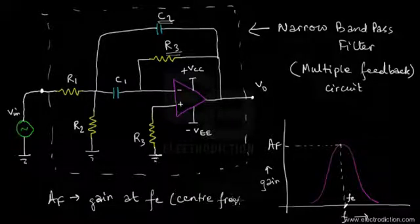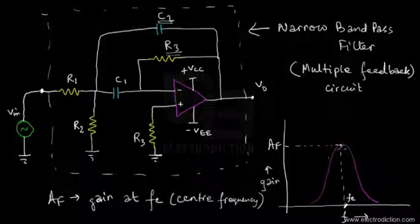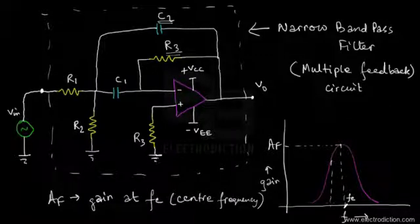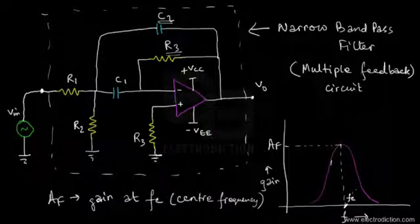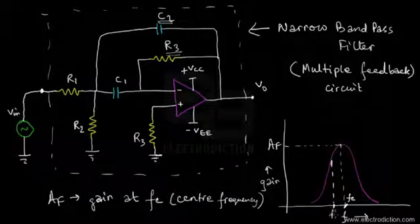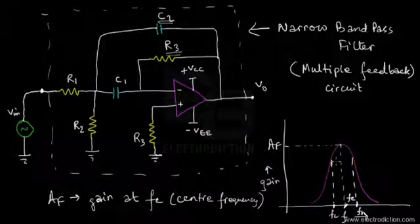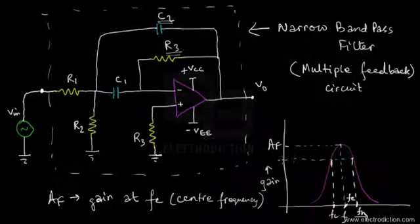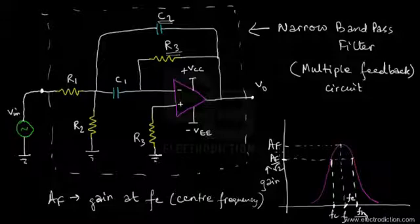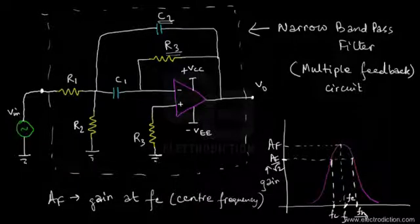It's obviously going to have upper and lower cutoff frequencies. Here is the lower cutoff frequency, known as FL. On the other hand, this particular line over here indicates the upper cutoff frequency FH. The gain falls to 1 over root 2 times its value — so here it's going to be AF divided by root 2. The gain falls at 1 over root 2 times its value at the center frequency at both the upper and the lower cutoff frequencies.